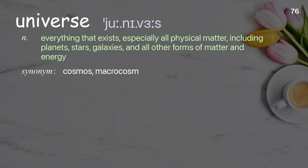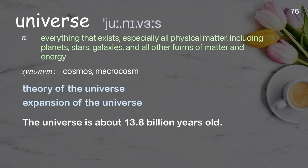Universe: Everything that exists, especially all physical matter, including planets, stars, galaxies, and all other forms of matter and energy. Examples: Theory of the universe. Expansion of the universe. The universe is about 13.8 billion years old.